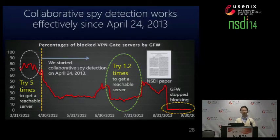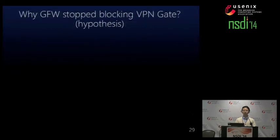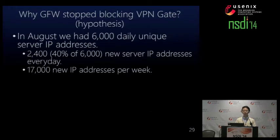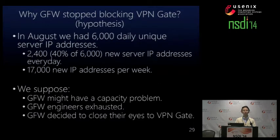Around the time we finished the NSDI paper writing, the Great Firewall stopped blocking VPN Gate suddenly. Why did the Great Firewall stop blocking VPN Gate? We do not know the exact reason. However, in August we had 6,000 daily unique server IP addresses worldwide, with 40% of them — about 17,000 new IP addresses per week — appearing every day. So it might have reached the capacity of the Great Firewall, or the Great Firewall engineers exhausted themselves trying to block us. So the Great Firewall decided to close its eyes to VPN Gate.